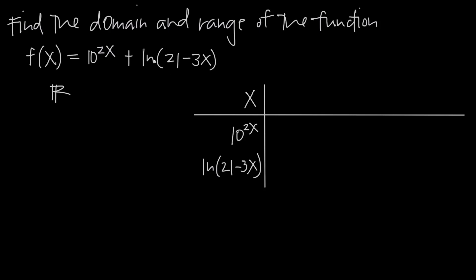In this case, we have the natural log, and that's always going to limit the domain of the function. The argument has to be greater than 0 in order for the natural log to be defined. So the domain is restricted by this inequality: 21 minus 3x must be greater than 0. There's nothing about 10 to the 2x that's going to restrict our domain, because any value of x we plug in — negative, zero, or positive — we're still going to get a real number.